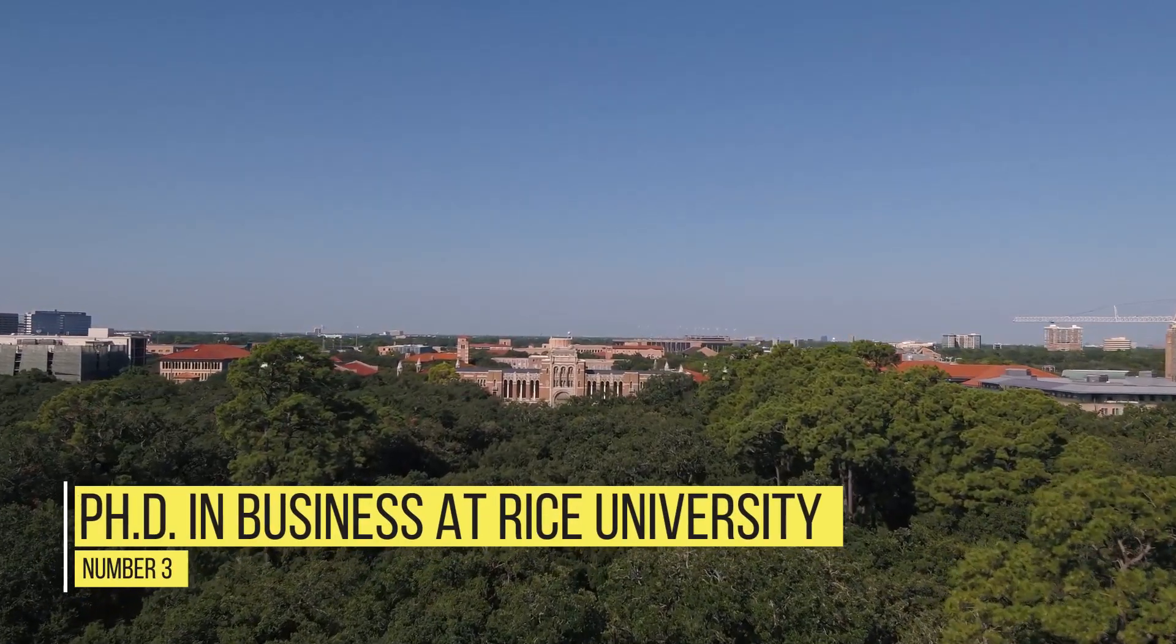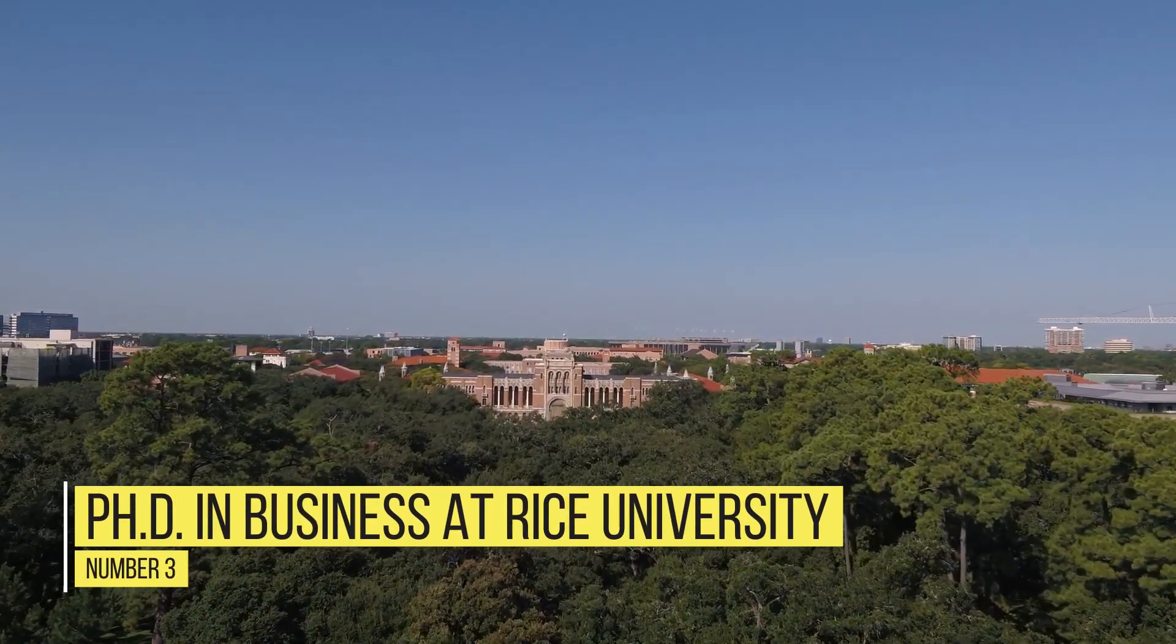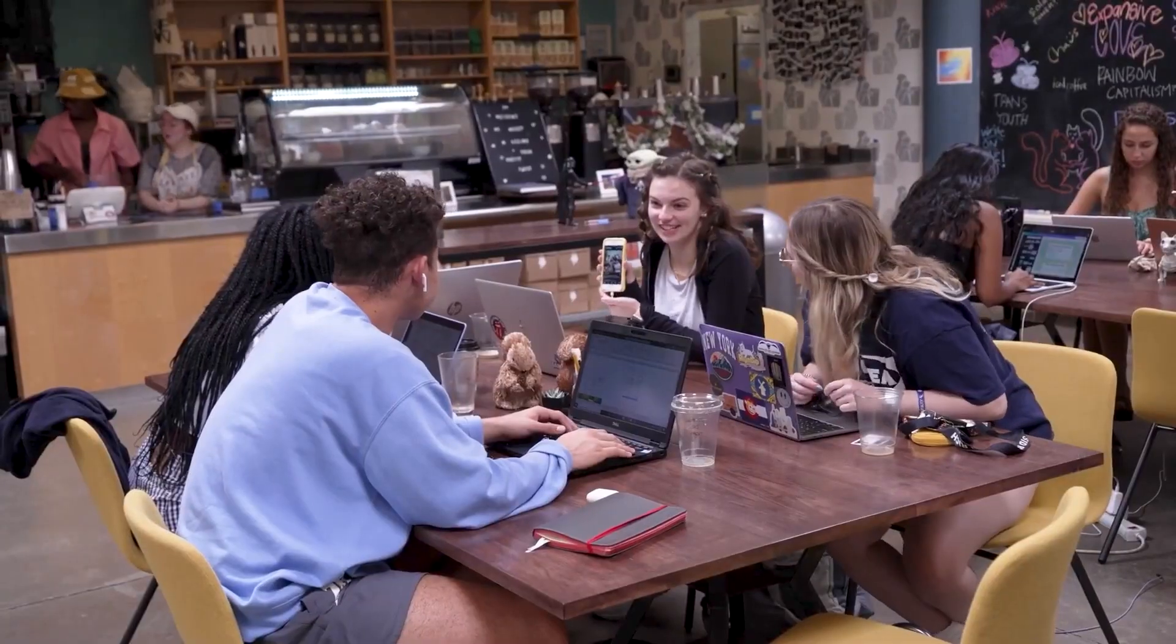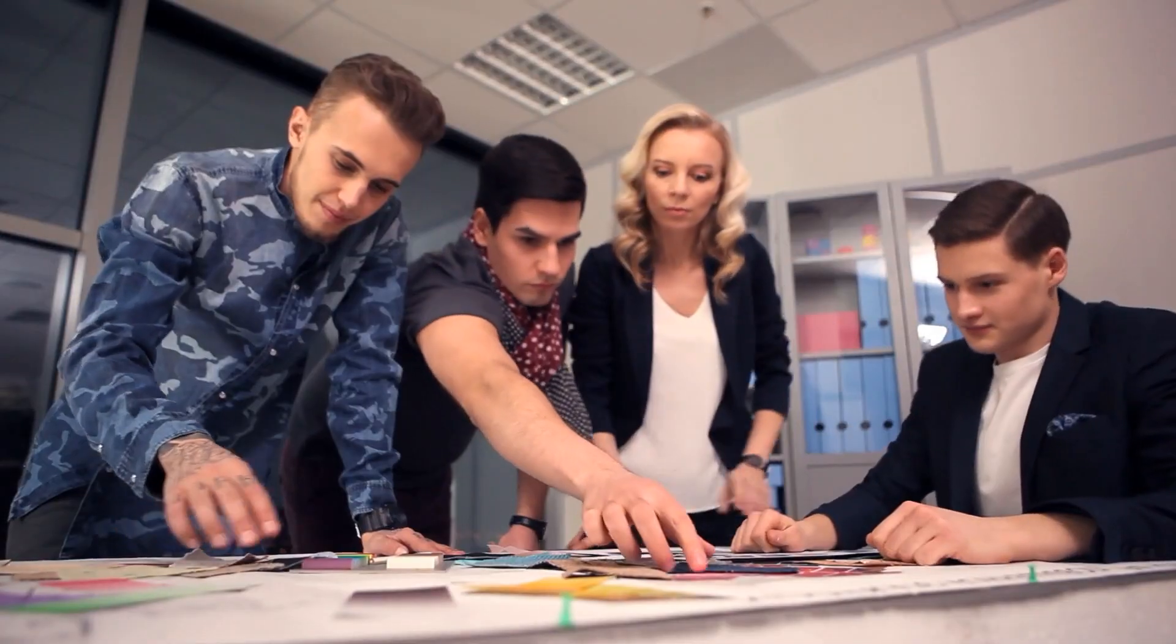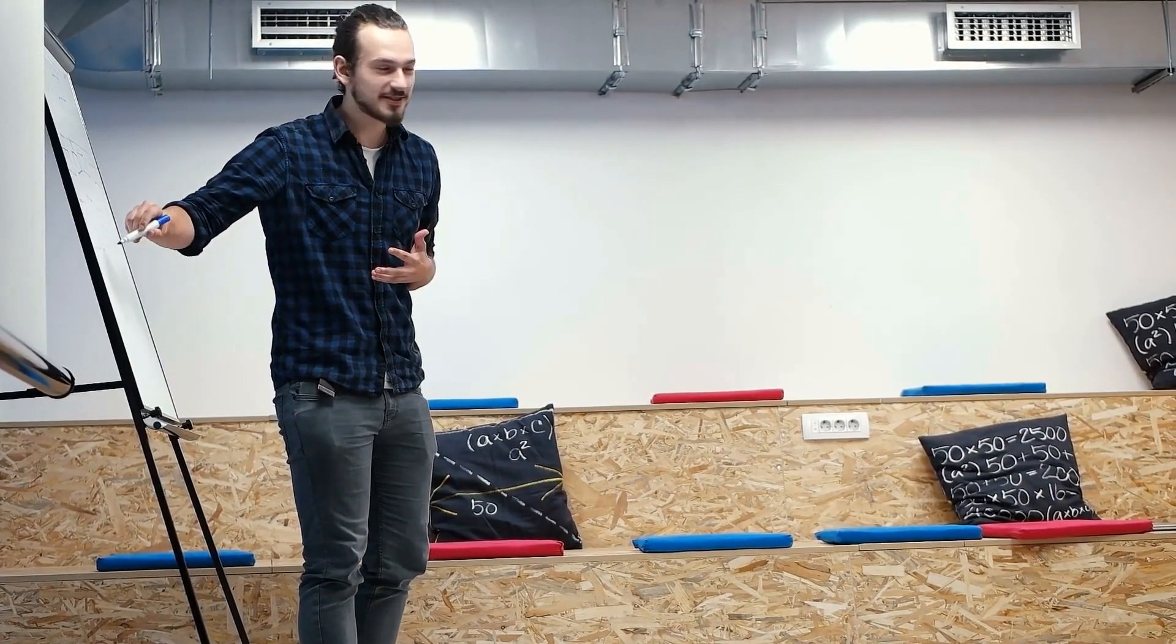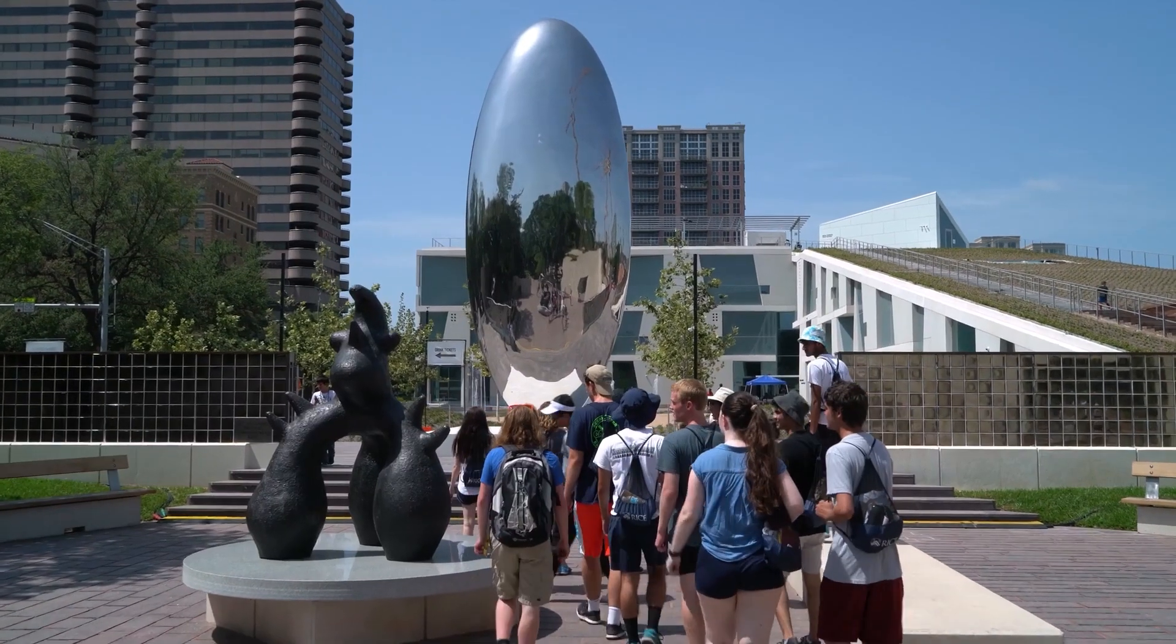Number 3: PhD in Business at Rice University. At the Rice University Jones Graduate School of Business in Texas, students enjoy full financial assistance upon admission to the PhD program, aiming to prepare students to teach in fields like accounting, finance, and marketing. The program provides students a research assistantship to earn a $40,000 stipend per year and a tuition waiver. The assistantship is merit-based and allows no more than 20 hours of work per week.